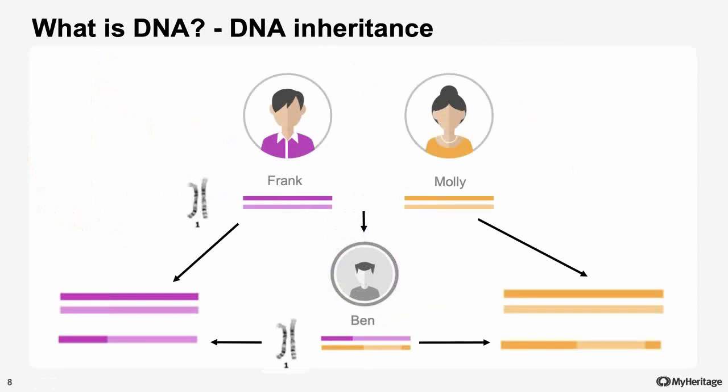I just said that I share 50% of my DNA with my father — but what does that actually mean? We inherit one strand of DNA from each parent per chromosome, totaling 23 including the sex chromosome. Let's use an example. Here we have a pair of parents, Frank and Molly, and their child Ben. For simplicity, let's talk about a single chromosome pair, chromosome 1. Each parent has two strands for that chromosome, one from each of their parents. Frank has the dark purple inherited from his male parent, and the light purple from his female parent. Molly has the dark orange from her male parent and the light orange from her female parent.